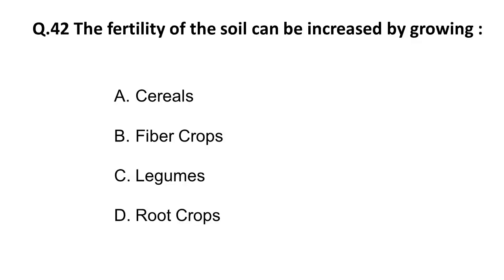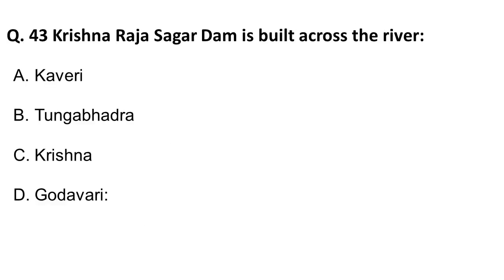The next question: the fertility of the soil can be increased by growing which of the following? This is a very common question. The answer is legumes. Legumes have the property of binding atmospheric nitrogen in their root nodules — as you may have learned in basic science education, root nodules help in fixation of nitrogen. The correct answer is legumes, option C.